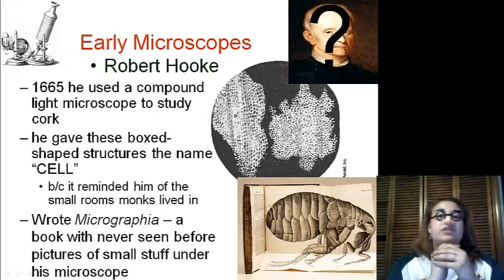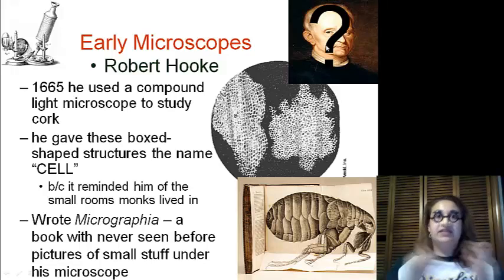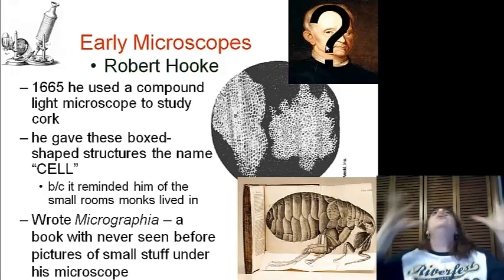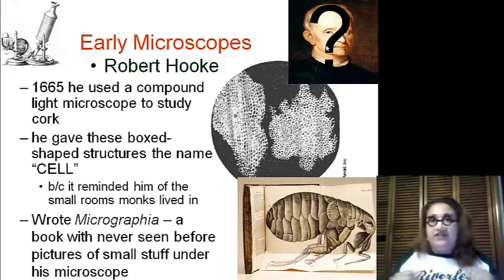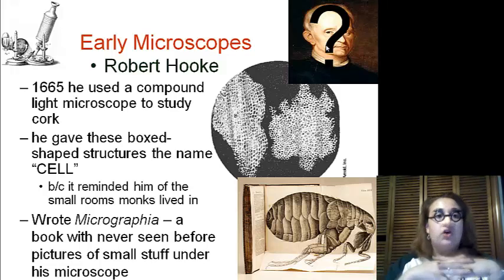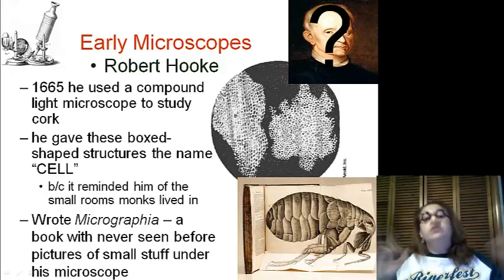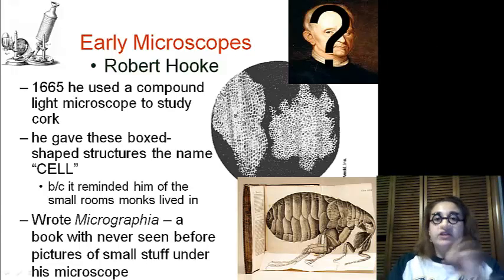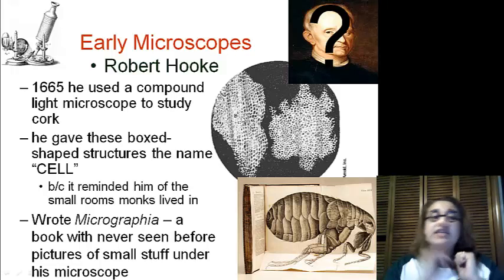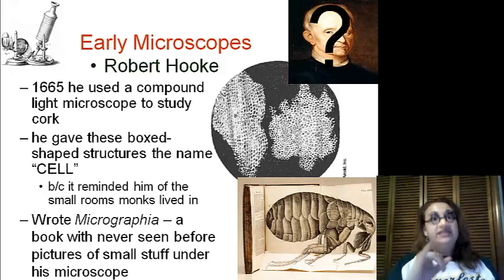Let's talk about the players. We start off with Robert Hooke. He is up here in the corner — except we actually do not know what he looks like because him and Isaac Newton got into this huge fight, and Isaac Newton burned all of his pictures and photographs after he had died. So, in 1665, he used a compound light microscope to study cork — the normal cork that you see up on the walls around you. Cork has little boxes, and he named each of these little boxes a cell because it reminded him of a small room that the monks lived in, which were called cells.